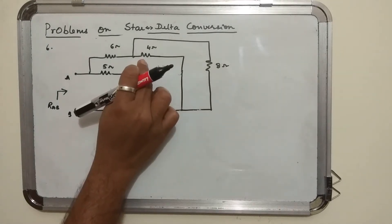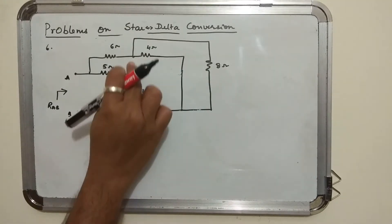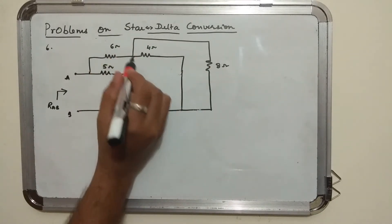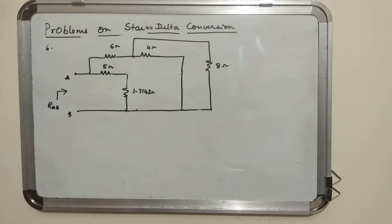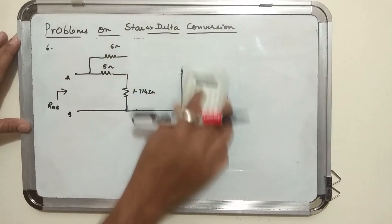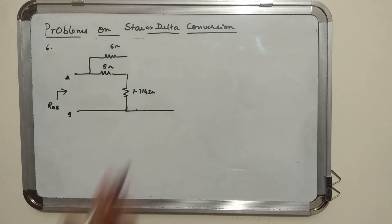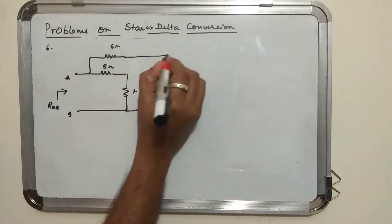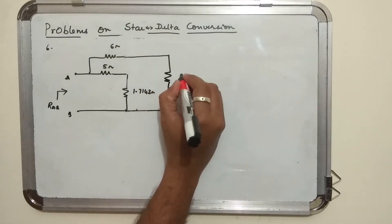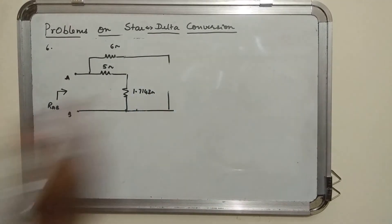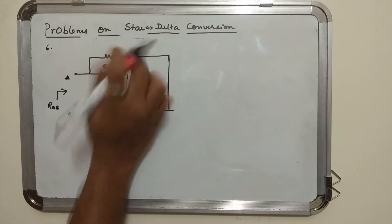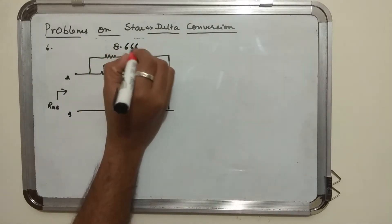Now I can see that 4 ohm and 8 ohm are also connected between the same two points, so they are in parallel. 4 and 8 in parallel gives 4 into 8 divided by 4 plus 8, which is 2.6667 ohms. The 6 ohm is in series with 2.6667, so adding them gives 8.6667 ohms.